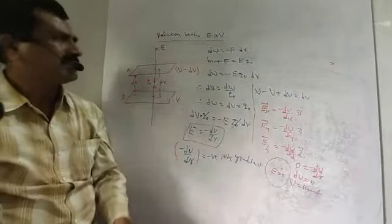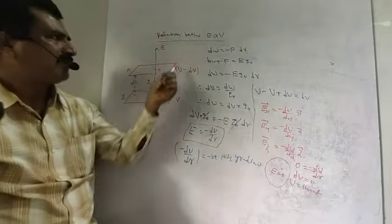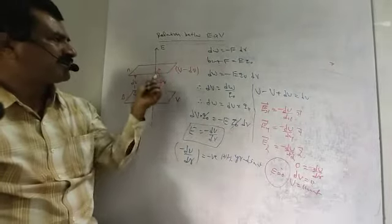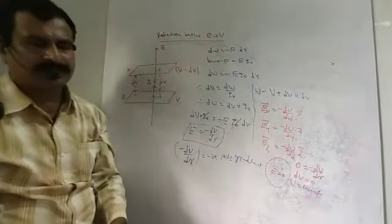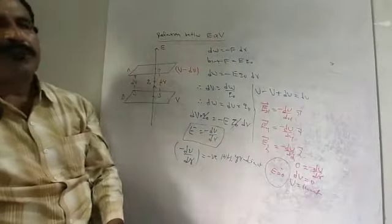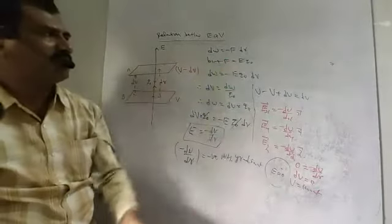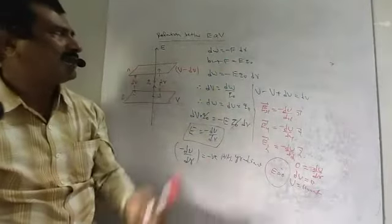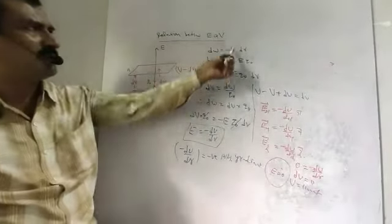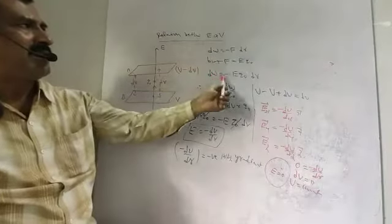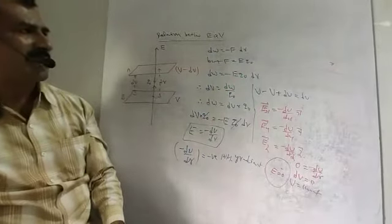The force F is equal to E into Q0, where E is the electric field and Q0 is the test charge. The work done DW is equal to minus E Q0 into DR.